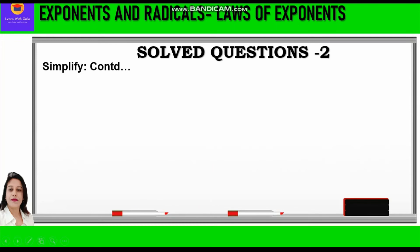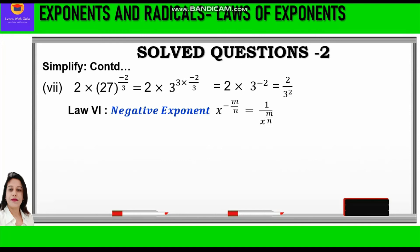Question 7: 2 into 27 raised to power minus 2 by 3. Now 27 is 3 cube, so we write 2 into 3 cube and whole raised to power minus 2 by 3. Applying power of power, 3 and 3 cancel and we are left with 2 into 3 raised to power minus 2. Since this is a negative exponent, we apply law 6 and reciprocate the base to get 2 upon 3 square, which equals 2 by 9.